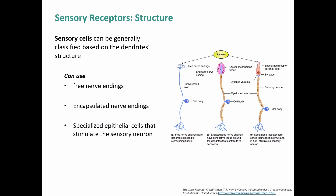Let's talk about sensory receptors based on their structure. Here we're focused on one specific location on the neuron — the dendrites. We can classify sensory neurons and receptors based on how the dendrites are structured. We can have free nerve endings, encapsulated or modified nerve endings, and specialized epithelial cells that stimulate a sensory neuron — adding an extra cell in the mix.